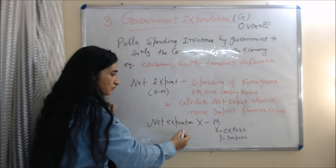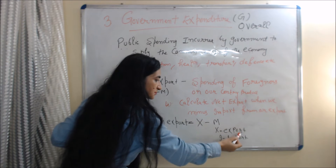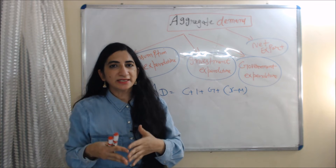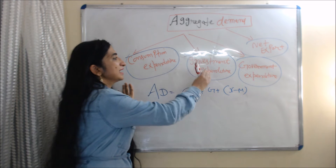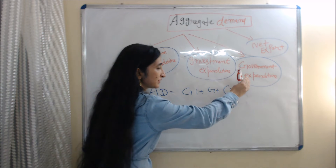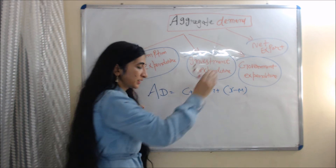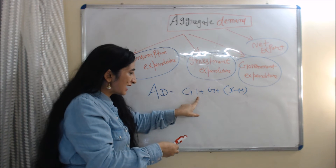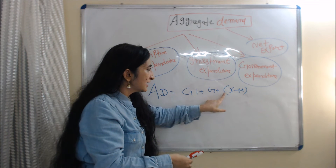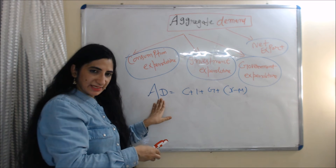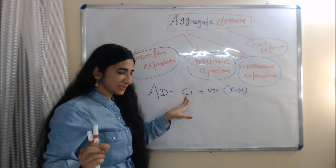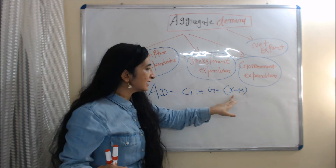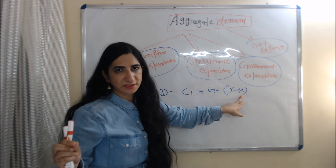As we discussed, aggregate demand consists of consumption expenditure, investment expenditure, government expenditure, and net export. We can represent it as: AD = C + I + G + (X − M), where AD is aggregate demand, C is consumption expenditure, I is investment expenditure, G is government expenditure, and X minus M is net export.